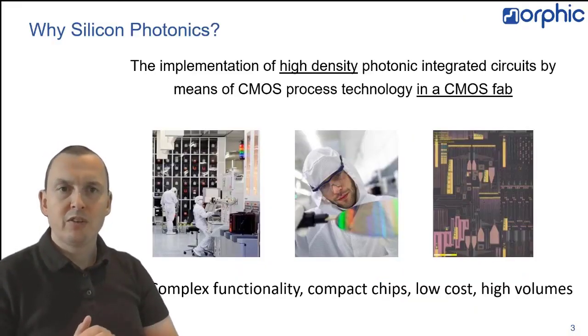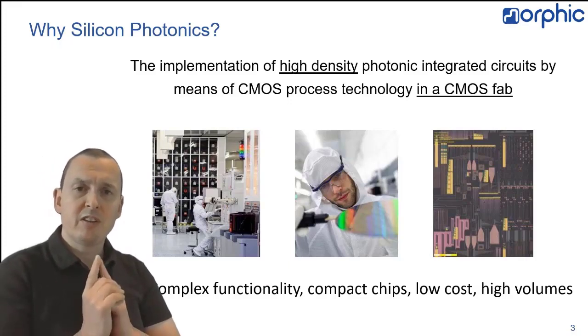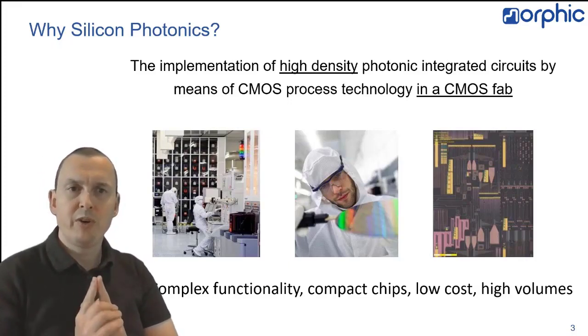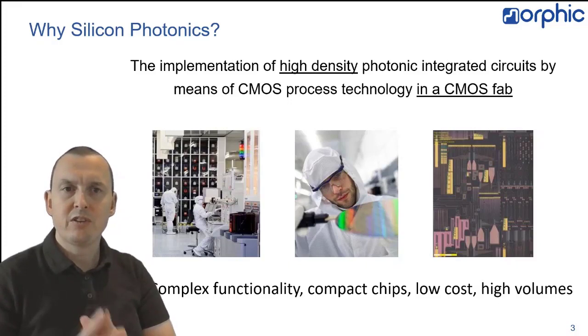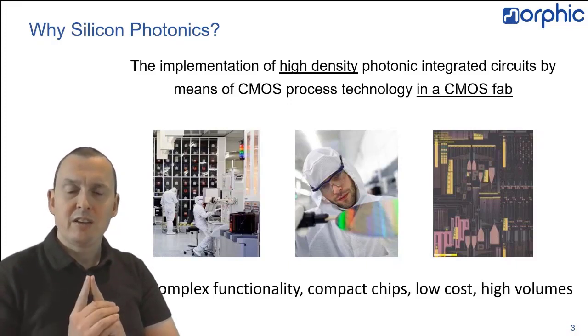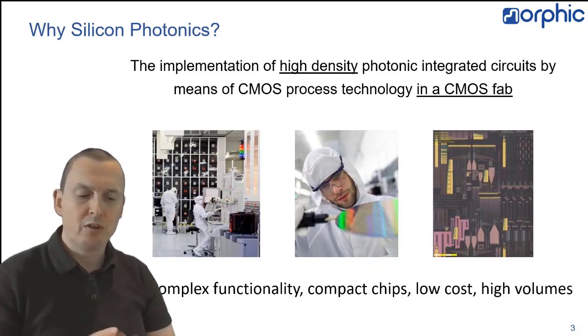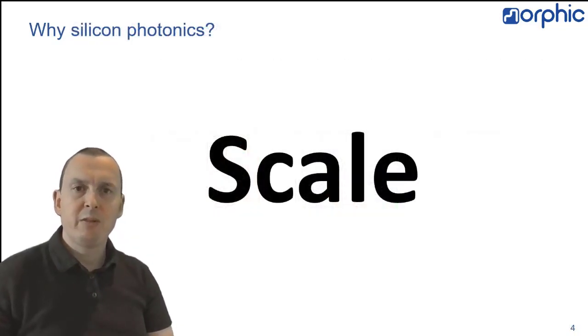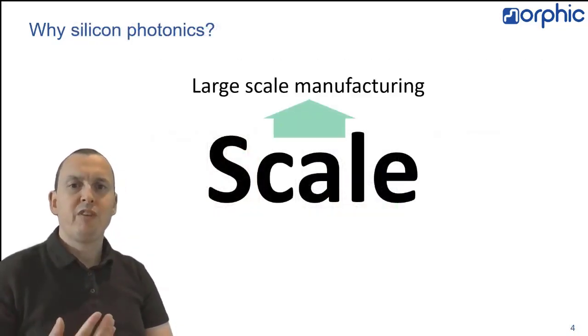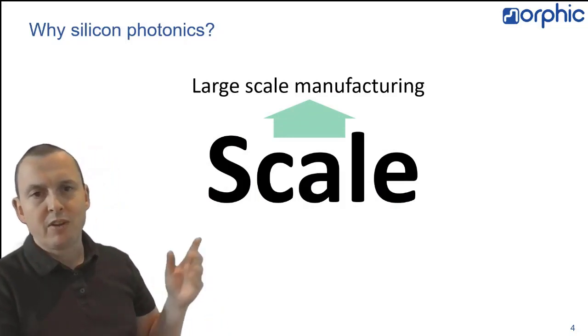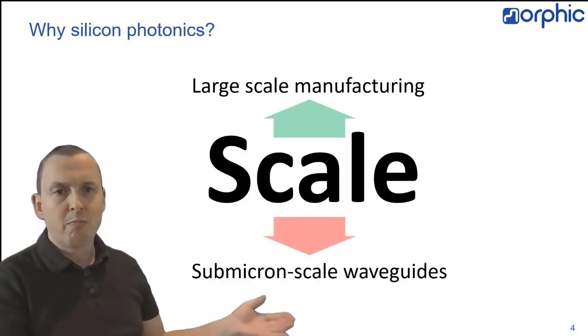Now, why silicon photonics? Because it's the technology that allows you to do really high-density photonic integrated circuits, and on top of that, do that in a CMOS electronics fab. So the result is complex functionality at a low cost that can be fabricated at high volume. Essentially, it gives you the scale benefit of large-scale manufacturing, and at the same time, the benefit of submicron waveguides that can be integrated by the thousands.